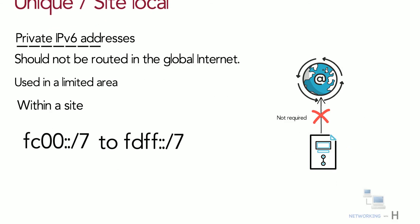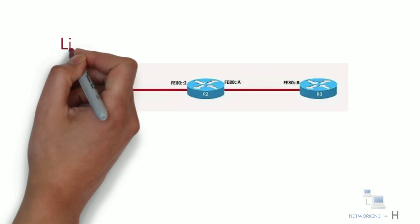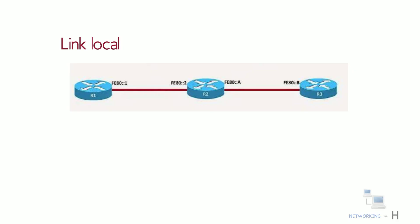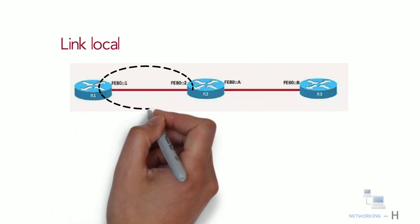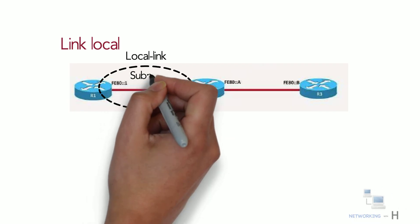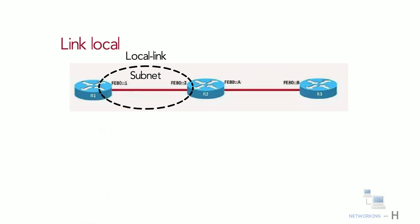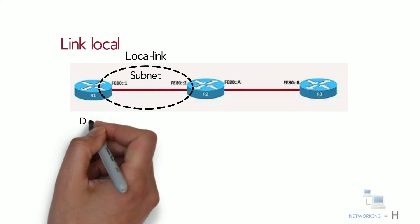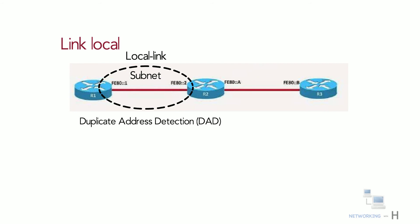Next, let's look at link local addresses. IPv6 uses link local addresses as a special kind of unicast address. Link local addresses are confined to a single link and are used to communicate with other devices on the same local link. In IPv6, the term 'link' refers to a subnet. Their uniqueness must only be confirmed on that link — because they are not routable beyond the link, routers do not forward packets with a link local address. Devices can use Duplicate Address Detection (DAD) to determine whether the link local address is unique. Link local addresses have a prefix of FE80::/10.